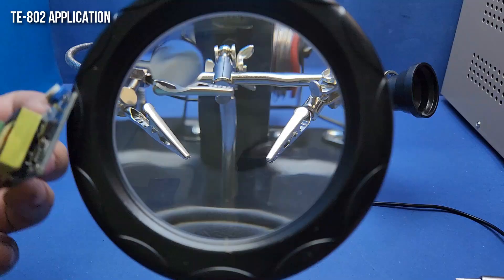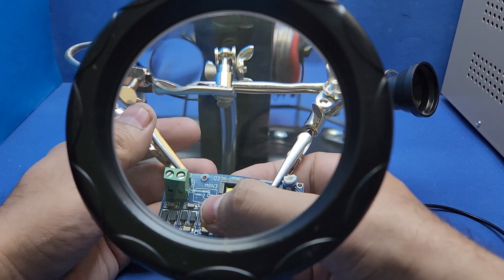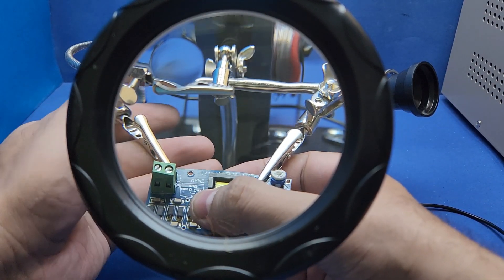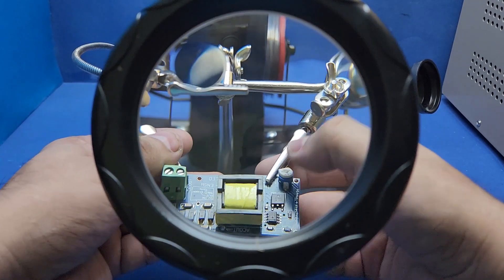Our soldering helping stand is fully assembled. So now I am going to show you how to use it by holding an actual circuit board in it. You can see what it looks like from the magnifying glass.